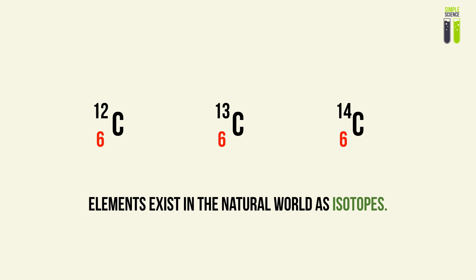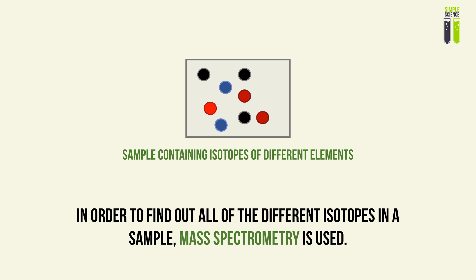To start this mass spectrometry video off, let's talk about isotopes. Elements in this world exist as natural isotopes, and the reason it's important to understand this in mass spectrometry is that we're dealing with samples, and we want to discover what isotopes are there within these samples. To find these, we need to use a mass spectrometer.